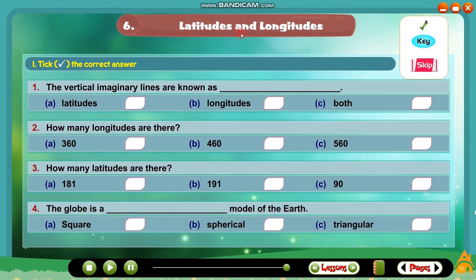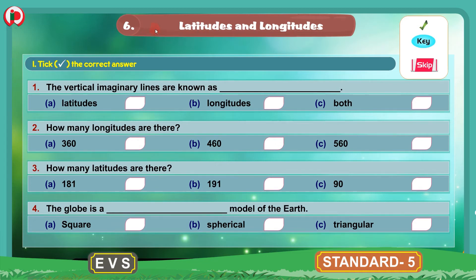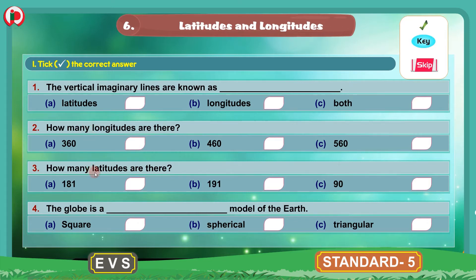Children, the 6th lesson in the course book is Latitudes and Longitudes. Now we will do the workbook part for this lesson. The first bit is 'tick the correct answer.' We have 2 incomplete sentences and 2 questions, and we have to choose the correct answer and put a tick mark in the box of the correct answer.